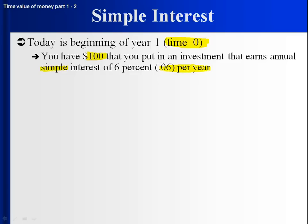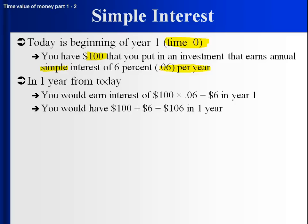What happens in one year from now? In one year from today, you will get interest — it would be 6% times $100. So you would get $6 in interest for year one. That means you would have the original $100 plus the $6 in interest, which gives you $106.